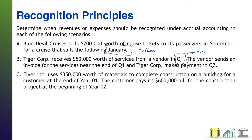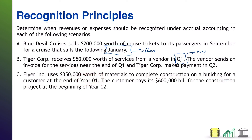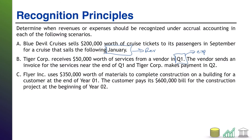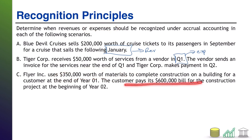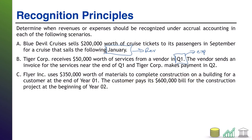All right, let's check out Scenario C. Flyer Inc. uses $350,000 worth of materials to complete construction on a building for a customer at the end of year one. The customer pays its $600,000 bill for the construction project at the beginning of year two. Notice we have two different amounts. The $350,000 worth of materials used represents the using up of an asset — a cost incurred — so that's expense recognition. The $600,000 charge to the customer is your revenue from this job, so that deals with revenue recognition. We've got both going on here.